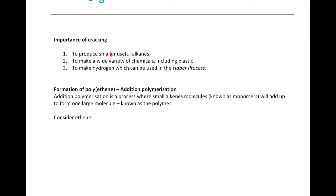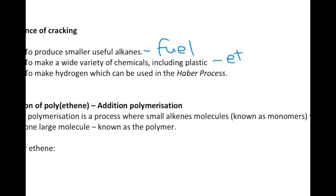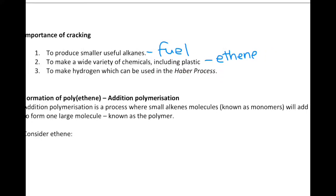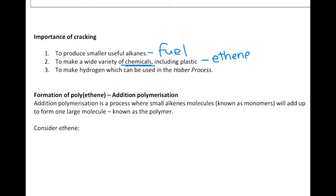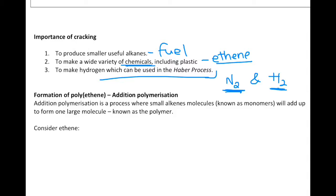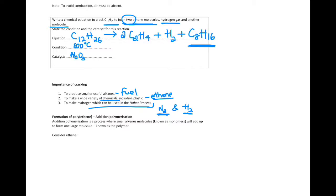The complete equation requires conditions of 600°C with aluminium oxide as catalyst. Cracking is very important because it produces smaller, useful alkanes — the bigger alkanes are not very useful. Smaller alkanes are used as fuel and to make a wide variety of chemicals including plastics. Ethene is a particularly important starting material, used to make plastics. Cracking also produces hydrogen, which is used in the Haber process — hydrogen obtained from cracking combines with nitrogen from fractional distillation of liquid air.